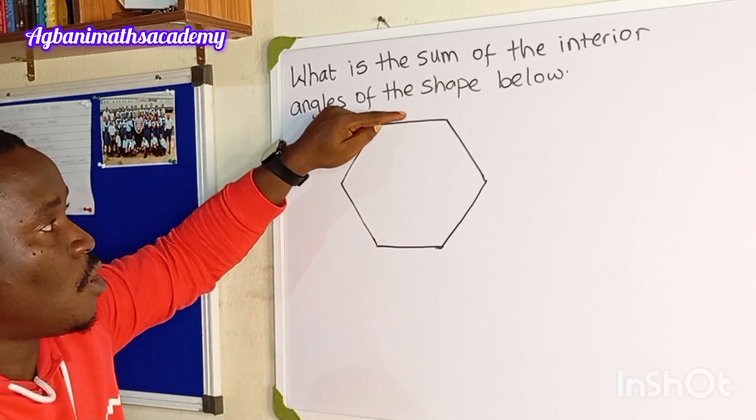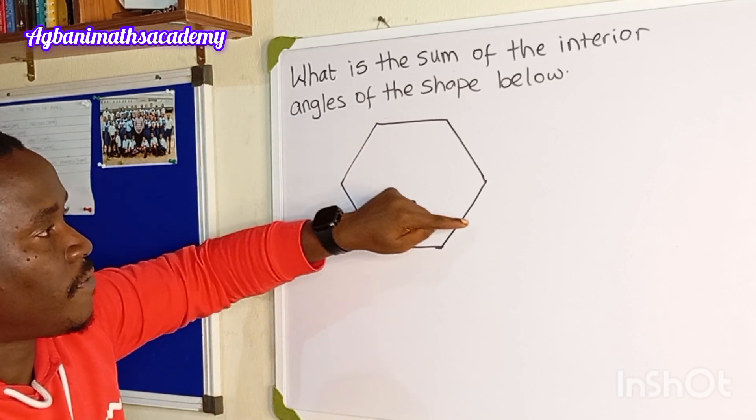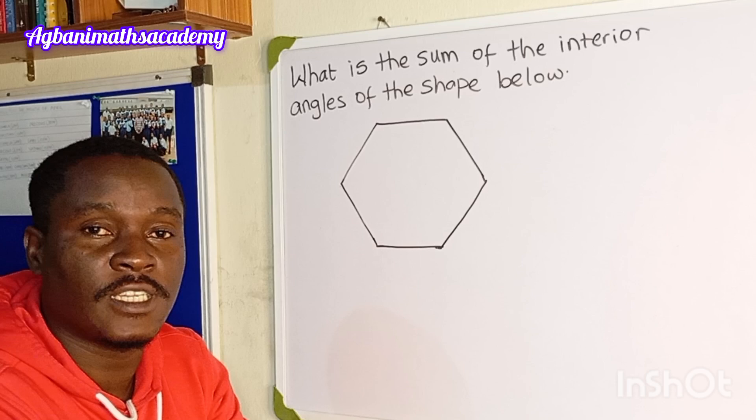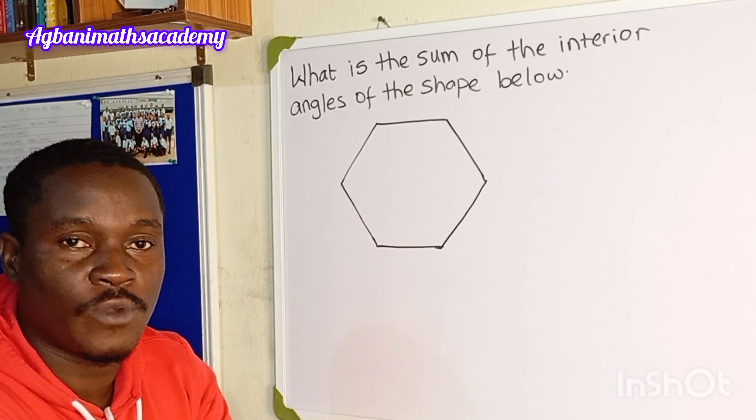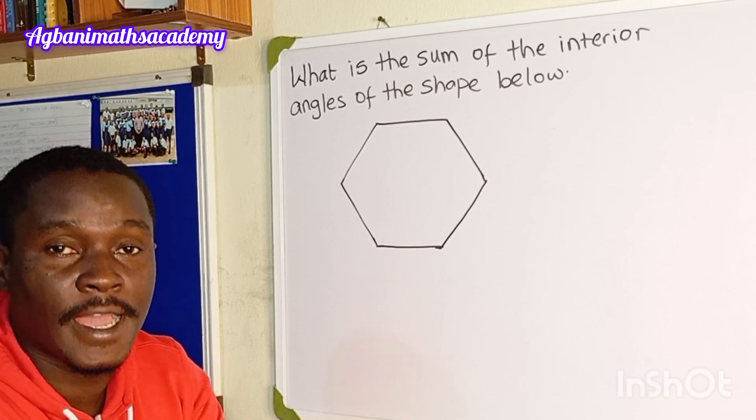Let's count the number of sides. 1, 2, 3, 4, 5, 6. So this is a six-sided polygon. Therefore, we can identify this polygon to be a hexagon.